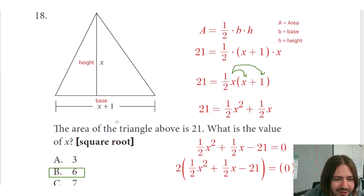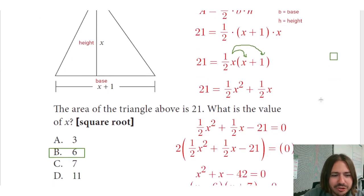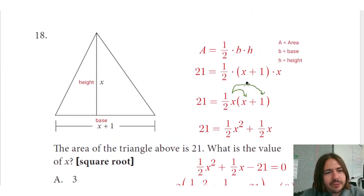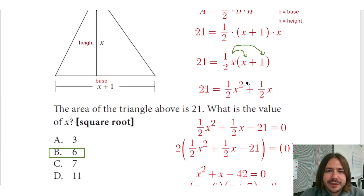1/2 times, what was the last one? I think it was 11, but let me double check. Yeah, 11. So 1/2 times 11 times 12 and see which one ends up equaling 21. All right, well that's about it for number 18. Thanks for watching and y'all have a great day.